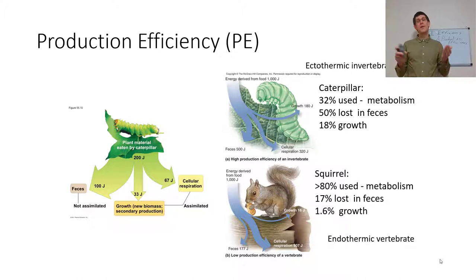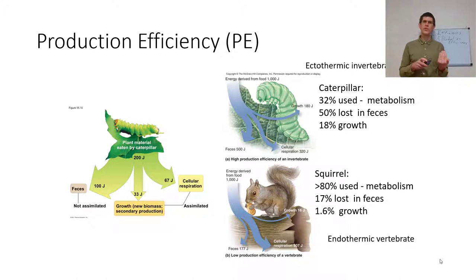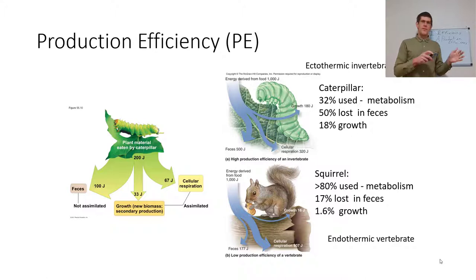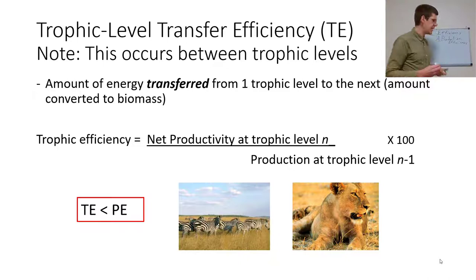Compared to a squirrel eating nuts or sunflower seeds: about 80% or more is used in metabolism. Squirrels are endothermic, so they burn a lot of calories to keep warm. About 17% is lost in feces — nuts and sunflower seeds are higher in lipids and proteins, so the ecological stoichiometry is closer to the actual squirrel. And only about 1.6% goes toward growth. The key difference between caterpillars and squirrels is ectothermy versus endothermy, which has a huge effect on production efficiency.